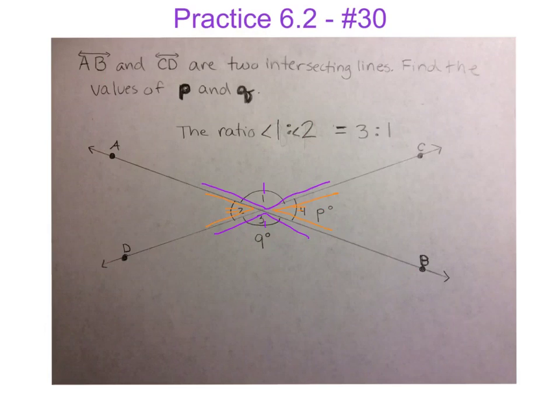So because we know that 1 and 3 are congruent, that means that whatever the measure of angle 1 is, and the ratio that it is, is going to be same for angle 3. So if we know that it's three parts for angle 1, it's also three parts for angle 3. And for angle 2, we know that if that's one part, that then our angle 4 is also one part.